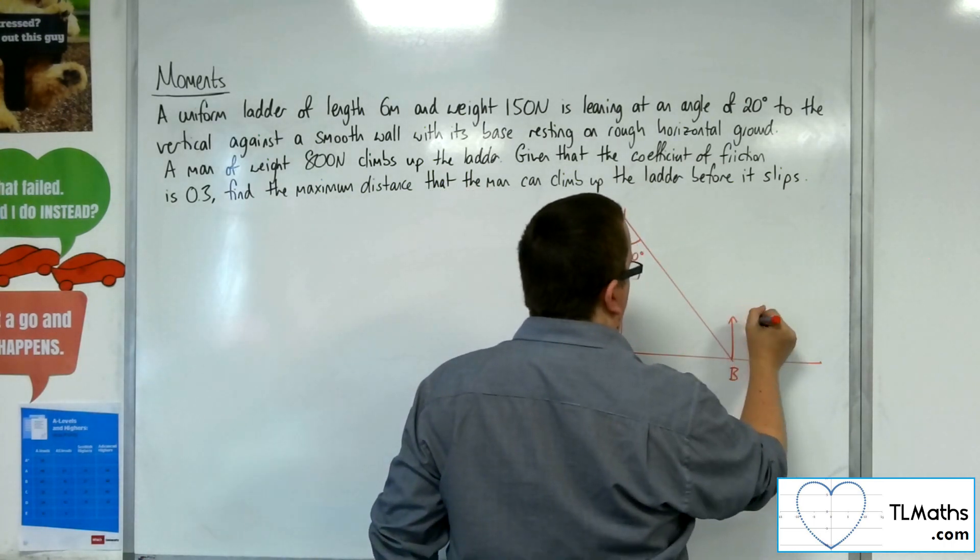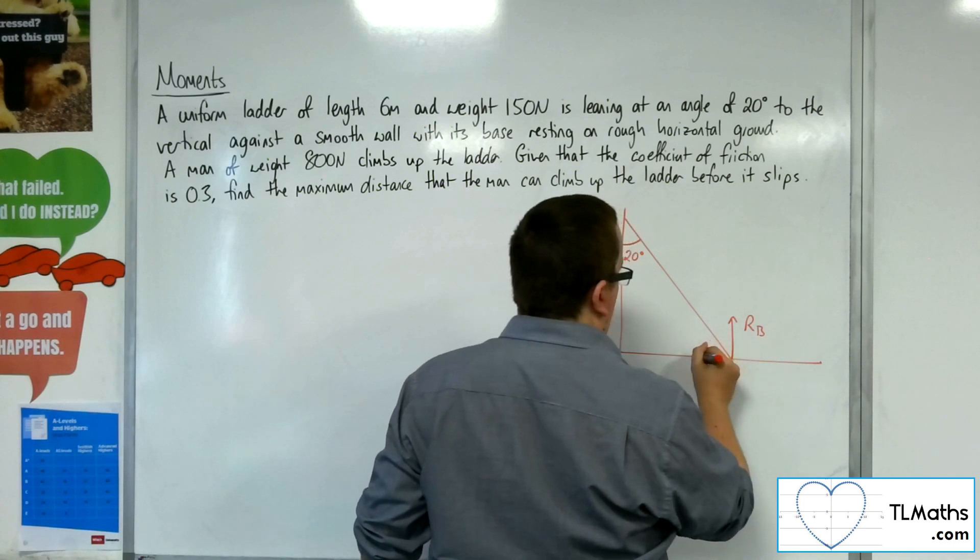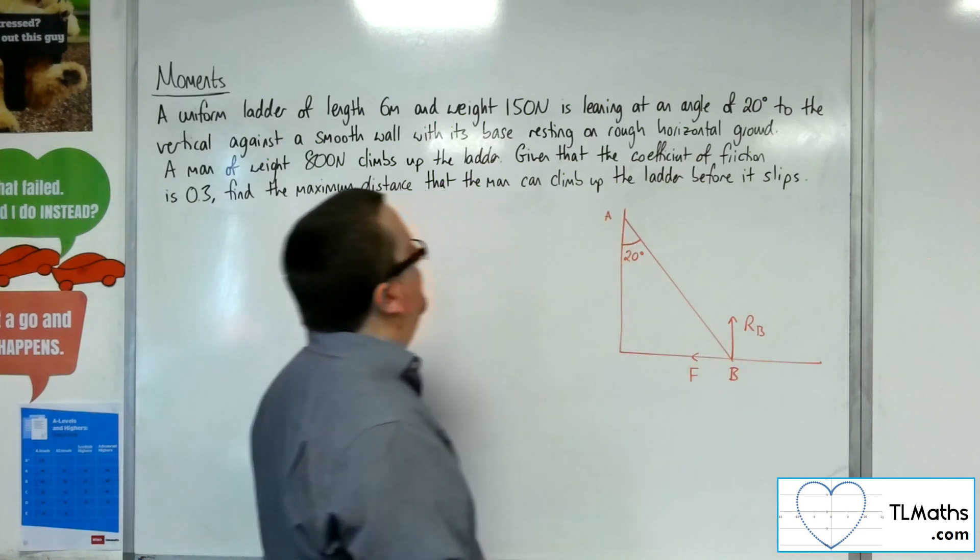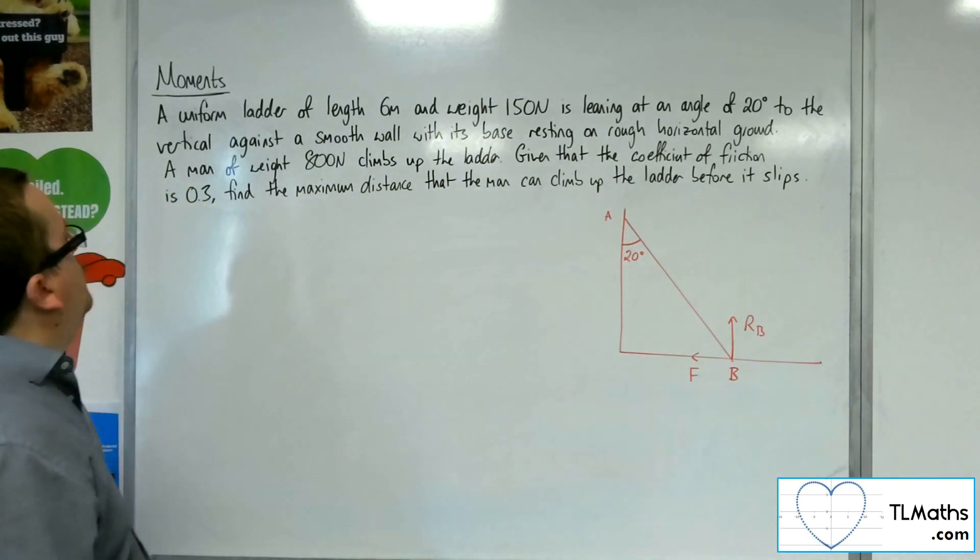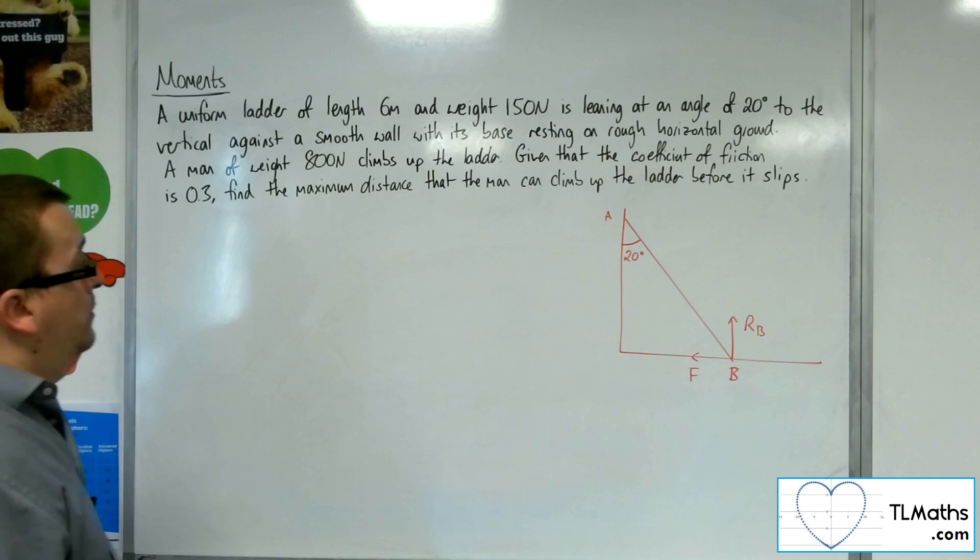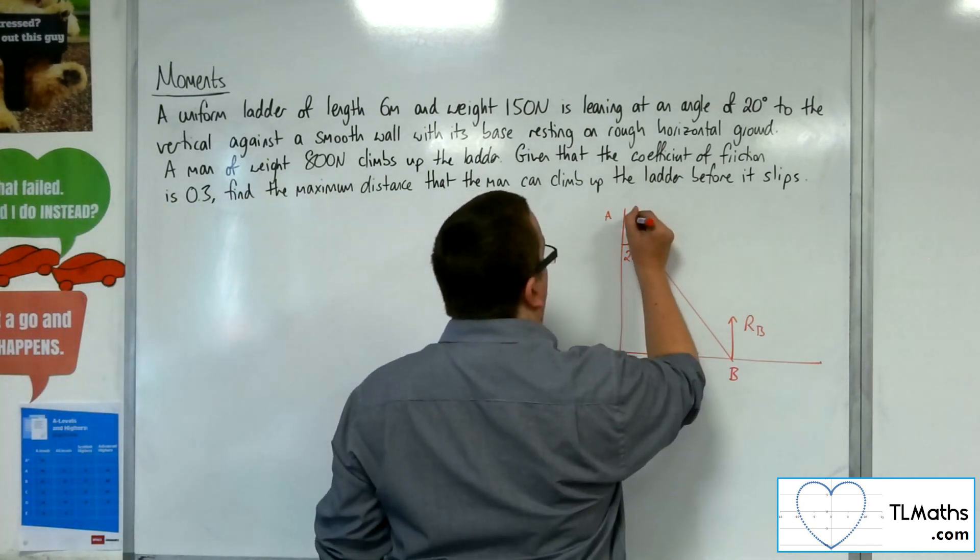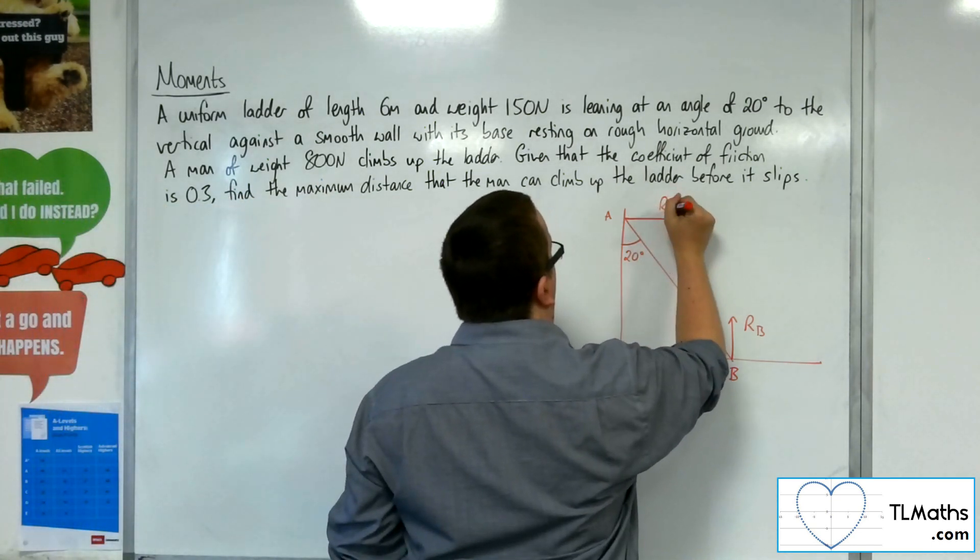So I'm going to have a normal reaction force, RB, and a frictional force working in that direction, F. The wall is smooth, so there's no frictional force, but there will be a normal reaction force, RA.